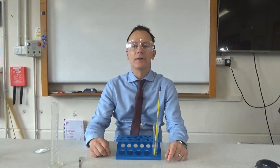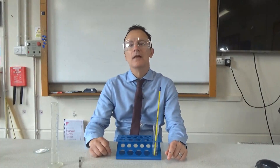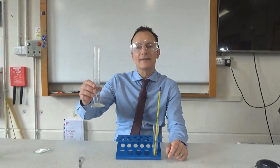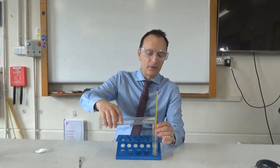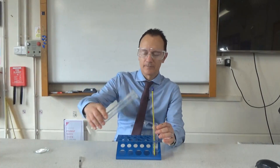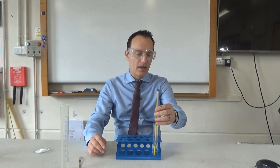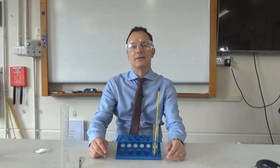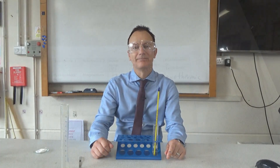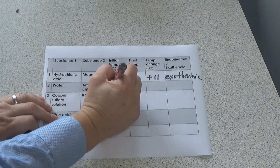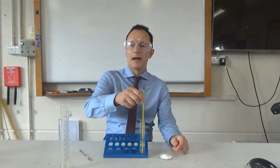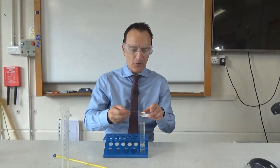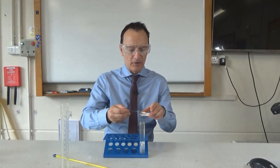The second reaction is between ammonium chloride and water. I've remembered to wash out the measuring cylinder after having acid in it, and I've measured out 20 centimeters cubed of water. I pour that into the boiling tube and take the starting temperature of the water — once again 20 degrees C — and write that down. I then remove the thermometer to add the second reactant: approximately three spatulas of ammonium chloride to the water.